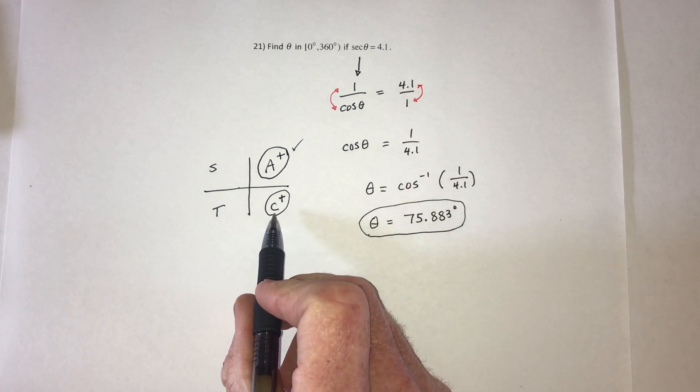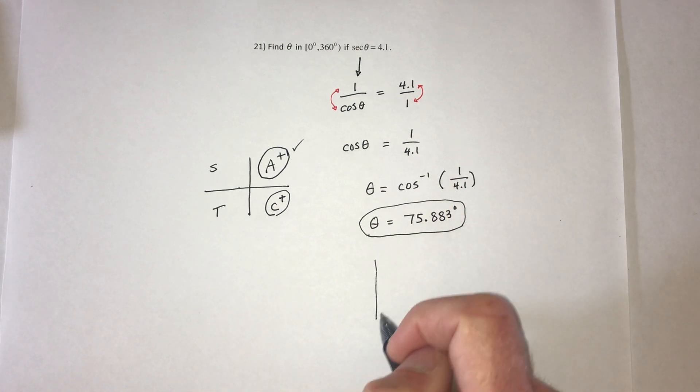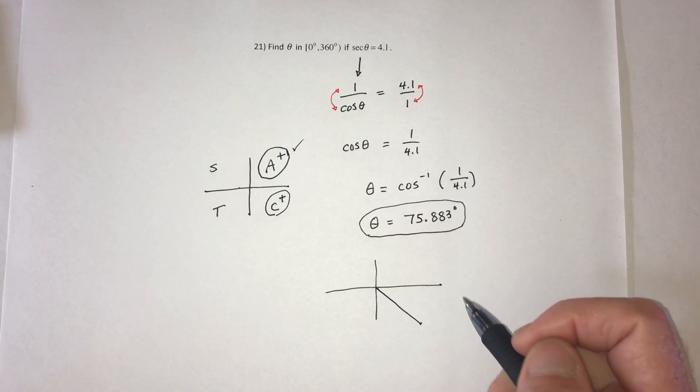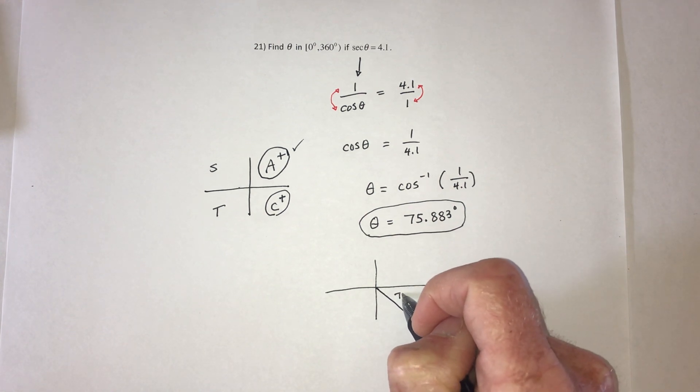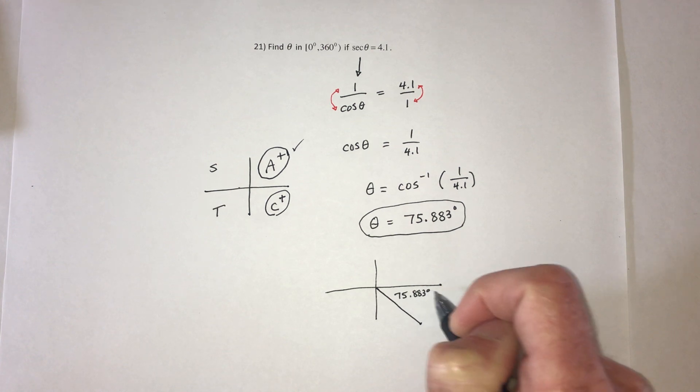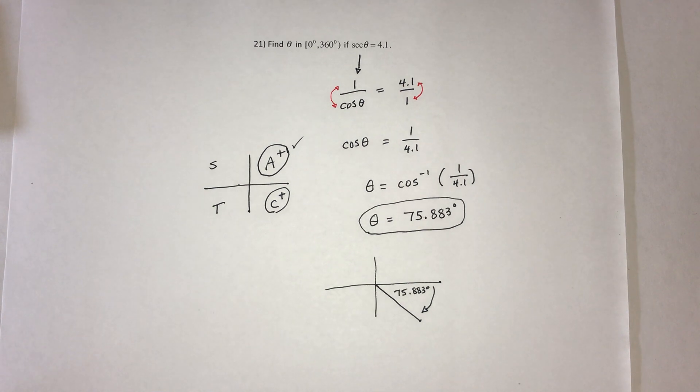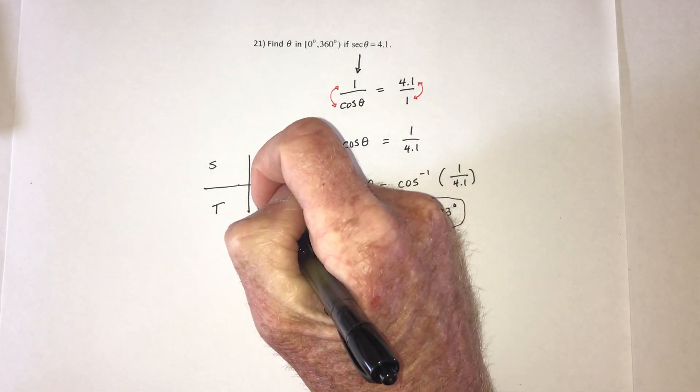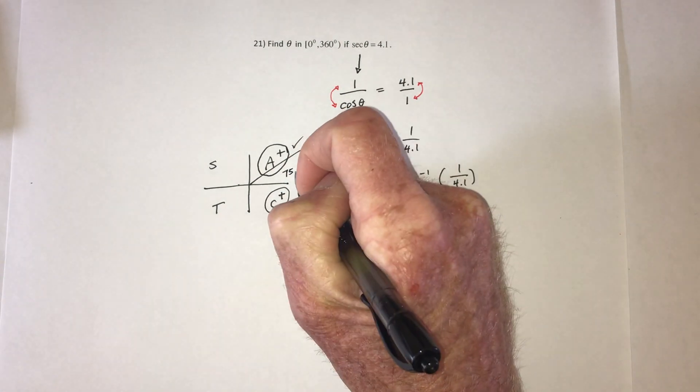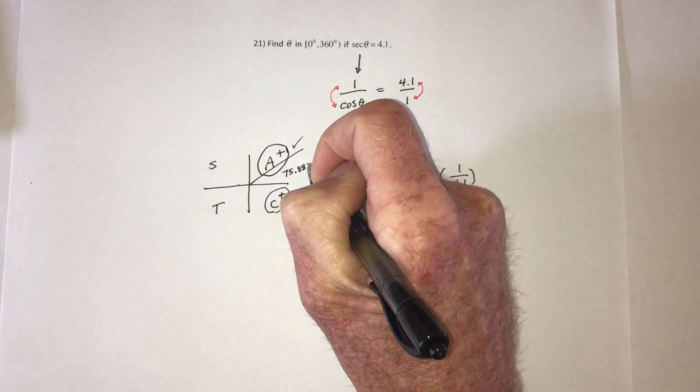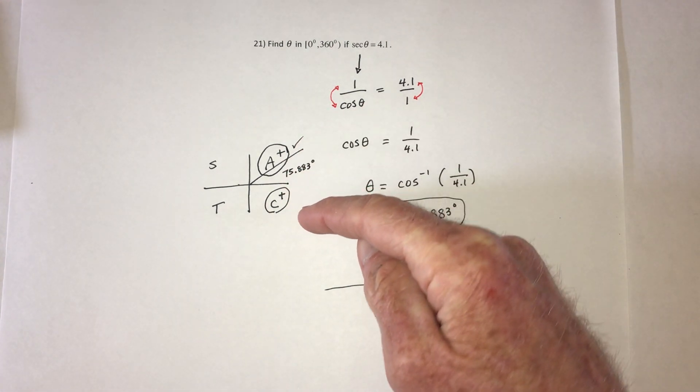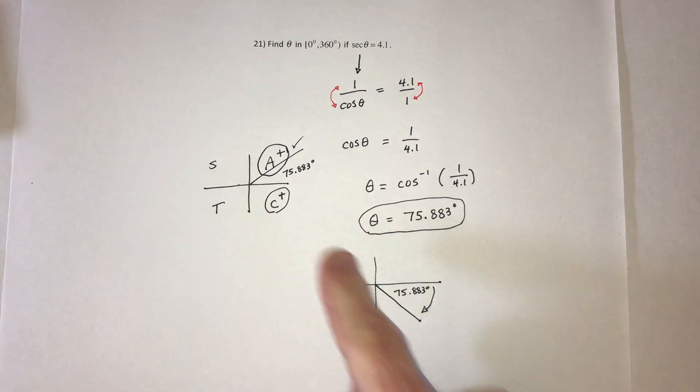Then what about this fourth quadrant? So you could draw the angle in the fourth quadrant, and then this would be 75.883 degrees, but going in this direction. So basically, this angle right here is 75.883 degrees, and then take that line and just flip it over so that it's in the fourth quadrant, and it looks like that.